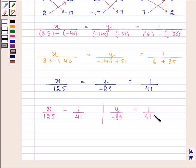Now, to find out the value of X, take 125 from the denominator of LHS to the numerator of RHS. And similarly, minus 89 will be taken from the denominator of LHS to the numerator of RHS. So on doing this, we get X equals 125 by 41, and Y equals minus 89 divided by 41.